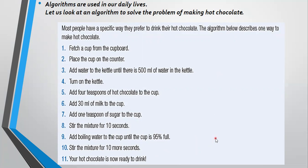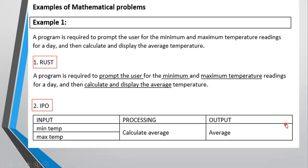Now we are going to look at algorithms of a more mathematical nature. Example one: a program is required to prompt the user for the minimum and maximum temperature readings for a day, then calculate and display the average temperature. When reading and understanding the problem, it is good to underline keywords to identify your IPO. Prompt means requesting an input — two things to be input: the minimum and maximum temperature readings. The process is to calculate and the output is to display the average.